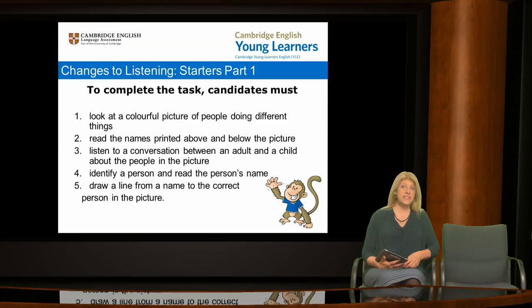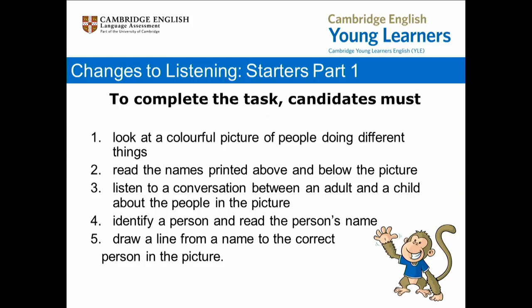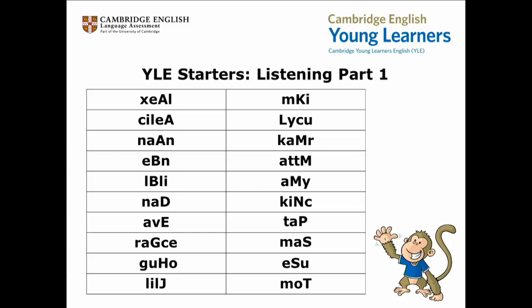If we focus on points 4 and 5 on the slide, it's clear that candidates must be familiar with the names they will encounter in both spoken and written forms. These are the 20 names that starter students need to know, but the letters are mixed up. The capital letters obviously indicate the first letter of each name. I'll give you a minute to unscramble as many of the names as you can.